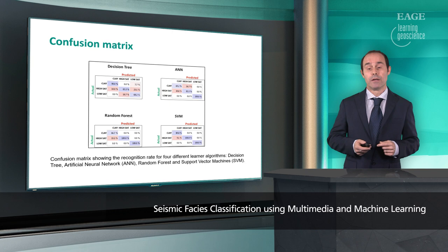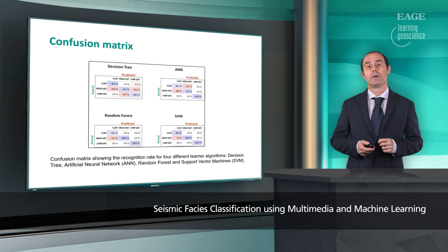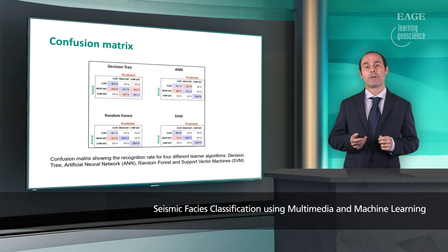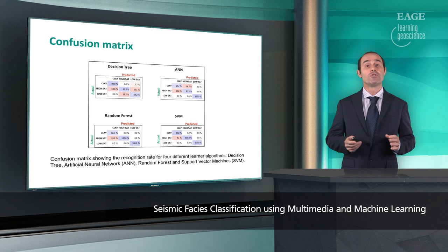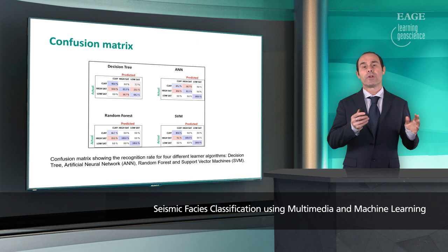In our system we have many learners, many different types of algorithms. Here we are showing just four examples of performance from four different machine learning algorithms: Decision Tree, Artificial Neural Networks, Random Forest, and Support Vector Machine. We are using a confusion matrix, which basically shows the recognition rate of the different learners. You have to look at the principal diagonal — for instance, looking at the Random Forest matrix, you can see a very high rate of good prediction, very close to or equal to 100%.